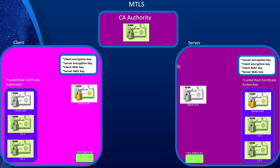The client generates a pre-master key, encrypts it using the server's public key, and sends it to the server. The server uses its private key to decrypt it. Now both client and server have the same values, and both independently use one of the agreed-upon encryption libraries to generate four keys on each side: the server encryption key, the client encryption key, a client MAC key to verify message integrity, and a server MAC key for the same purpose.